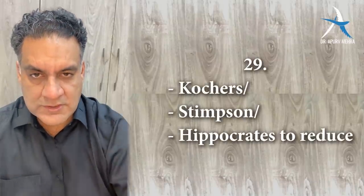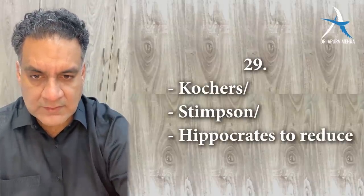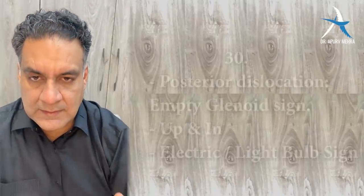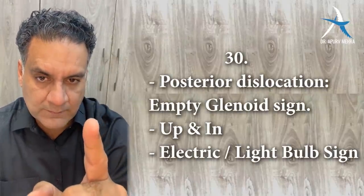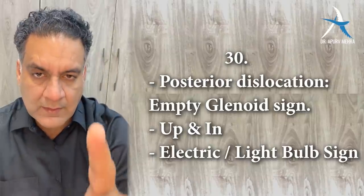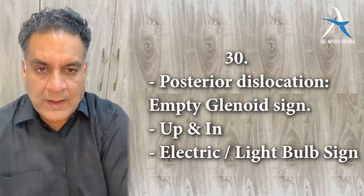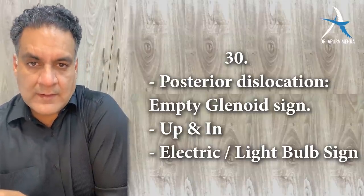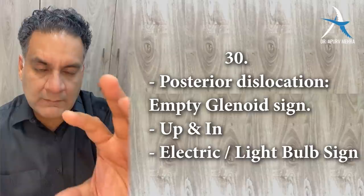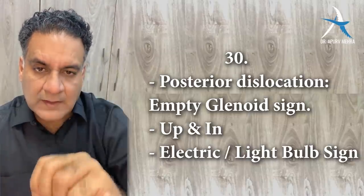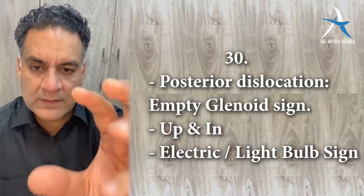Point number twenty-nine: to reduce a shoulder dislocation — Kocher's maneuver, Stimson's maneuver, and Hippocrates maneuver (Hippocrates is not done now). Point number thirty: in posterior dislocation of the shoulder (which is less common), the arm is by the side and the head is posterior to the glenoid. You will see the empty glenoid sign, or the head appears like an electric bulb — electric bulb sign.